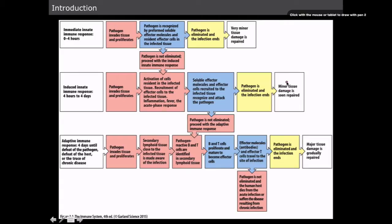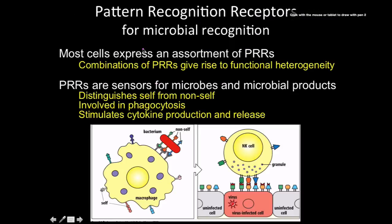If the innate response doesn't resolve the infection, the adaptive immune system is recruited. After that, three things can happen: the infection is cleared, you die, or you succumb to a chronic infection where the pathogen essentially lives inside you forever — Lyme disease is a good example of this.